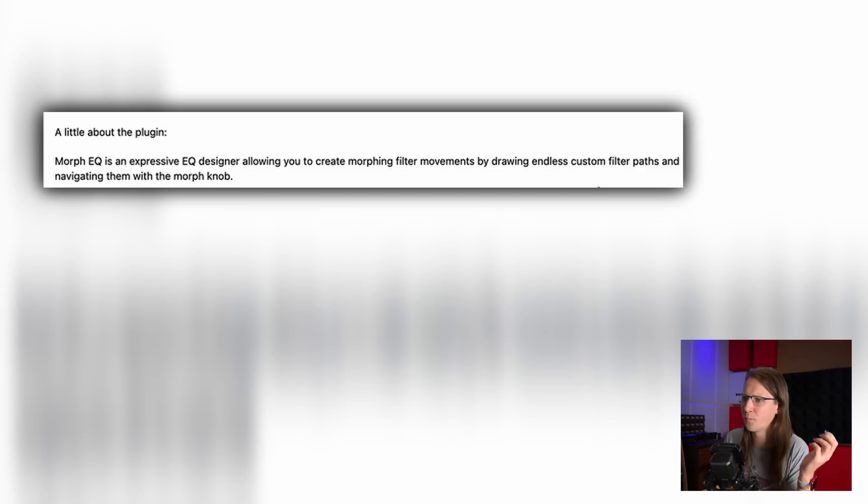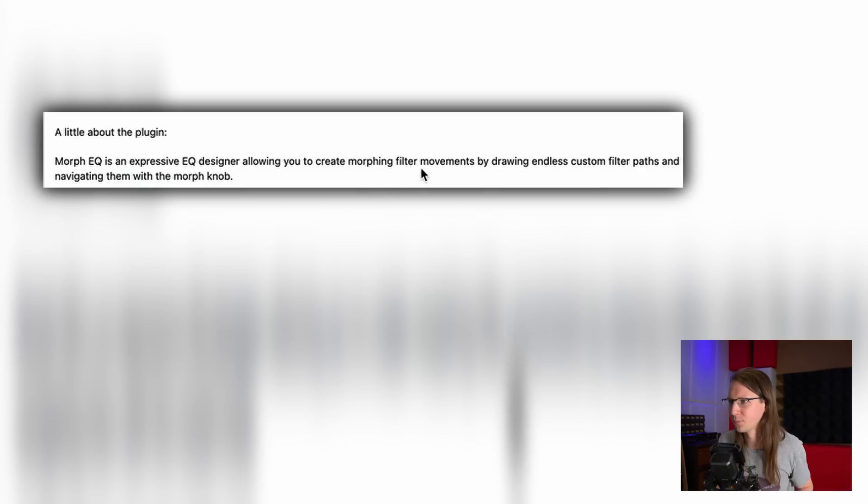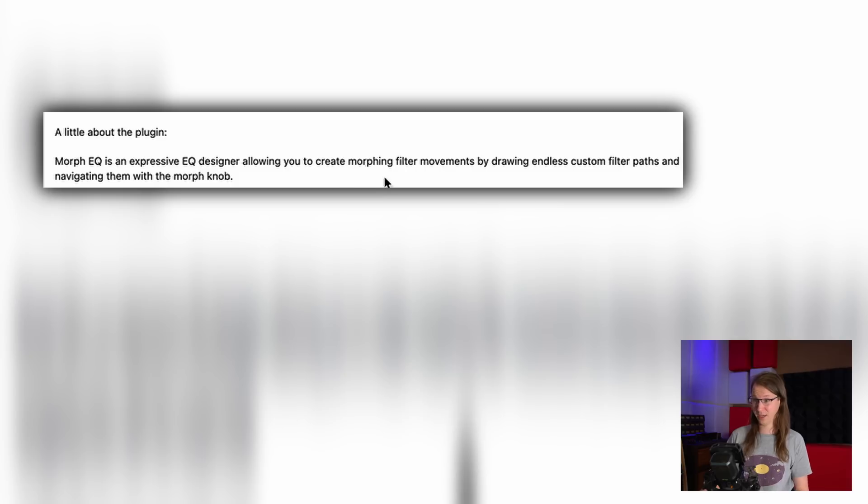I've got early access, but no website or marketing claims or anything. They do have one sentence in the email: 'Morph EQ is an expressive EQ designer allowing you to create morphing filter movements by drawing endless custom filter paths and navigating them with the morph knob.' So it sounds very interesting, a bit weird — and that's actually why I want to take a look at it. EQ plugins have to be kind of special before I'm bothered by them, mostly because they're all the same, all some kind of FabFilter Pro-Q 3 clone.